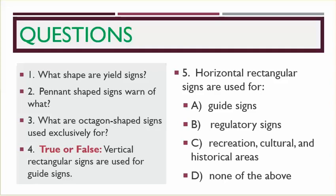Number four, true or false? Vertical rectangular signs are used for guide signs. Number five, horizontal rectangular signs are used for A: guide signs, B: regulatory signs, C: recreation, cultural, and historical areas, D: none of the above.